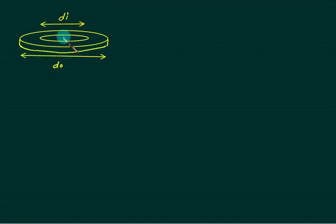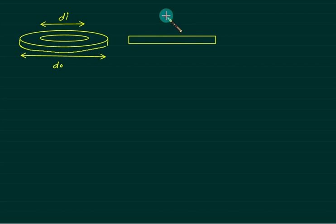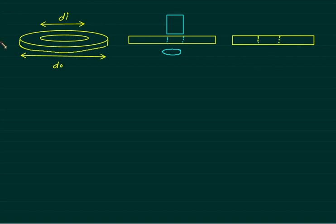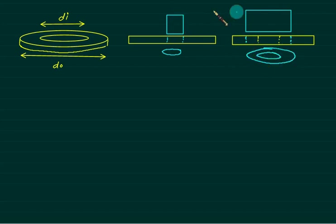Consider a washer with inner diameter d_n and outer diameter d_0. It can be prepared in two stages. First, a punch makes the inner hole (piercing). Then the same plate, now with the inner hole, is placed under a second punch to cut the outer diameter (blanking). This two-stage approach is called the staggered arrangement.